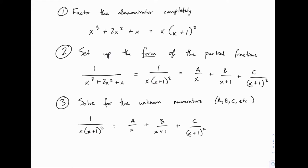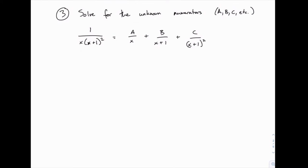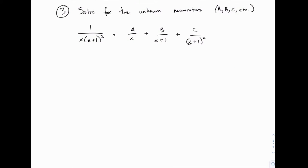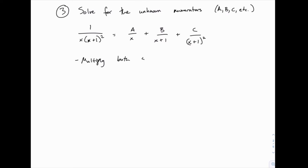The third step in a partial fraction decomposition problem is to solve for these unknown numerators a, b, c, and so on. We've already factored the denominator and written the form of the partial fractions. Now we need to actually solve for what a, b, and c are. To begin, we want to solve this equation that has fractions in it, and the easiest thing to do is to clear out all the fractions by multiplying by the least common denominator. The handy thing here is that we already know the least common denominator — it's the denominator on the left side. So the first step is always to multiply both sides by the original denominator.